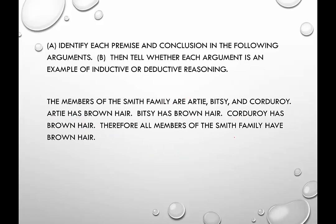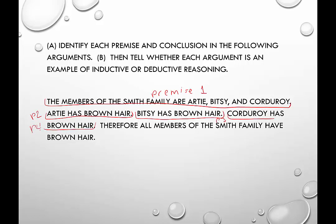Last but not least: the members of the Smith family are Artie, Bitsy, and Corduroy. Artie has brown hair. Bitsy has brown hair. Corduroy has brown hair. Therefore, all members of the Smith family have brown hair. We've got quite a few premises here. Premise one is the list of Smith family members. Premise two is that Artie has brown hair. Premise three is that Bitsy has brown hair. Premise four is that Corduroy has brown hair. And the conclusion is that all members of the Smith family have brown hair.